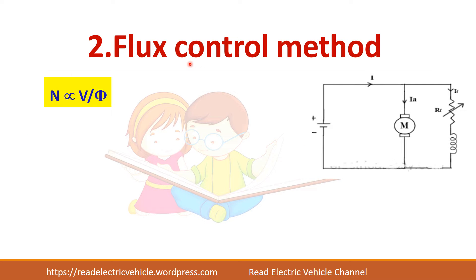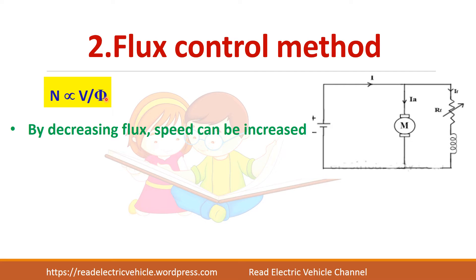Next you have the flux control method. Again the same formula: N is directly proportional to V by phi, but here we are changing the flux. So how to change this flux? You put a resistor in series with the field winding, so the field current will change, which means the flux can be changed. As flux decreases, speed will increase.